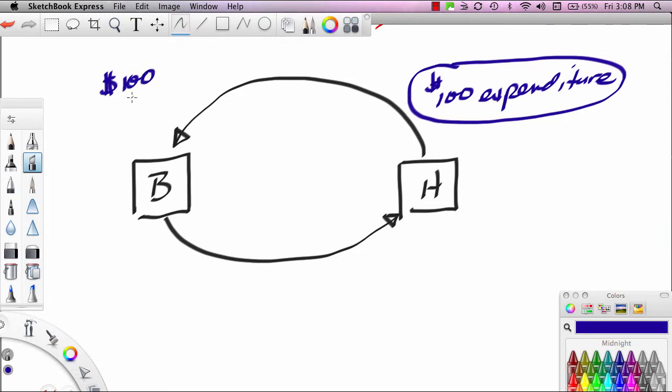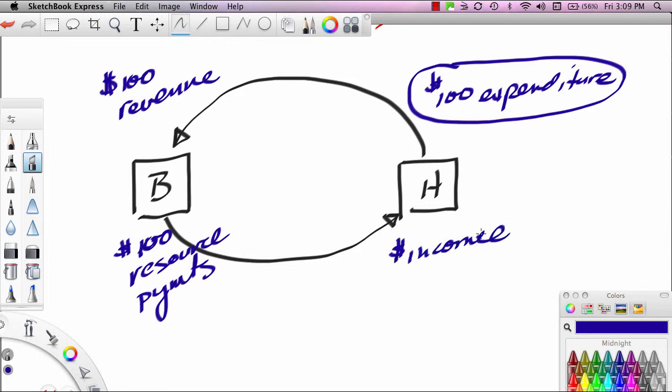That flows over to businesses as $100 in revenue. That flows out of the business sector as $100 in resource payments. And that flows over to households as $100 of income. Now, this was explained earlier in a video I did on the simple circular flow model. So I'm not going to go through all the details of these connections. I'm assuming that the person watching the video here has seen the other video. But the point is, expenditures flow around the simple circular flow model and become income.